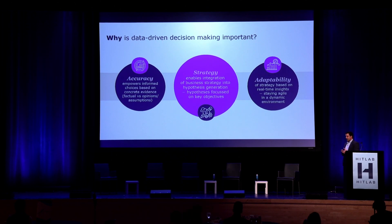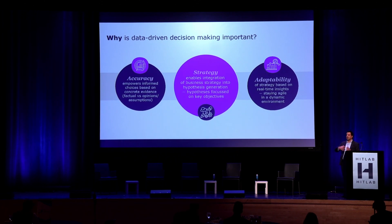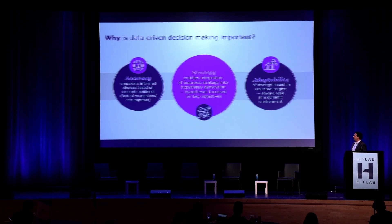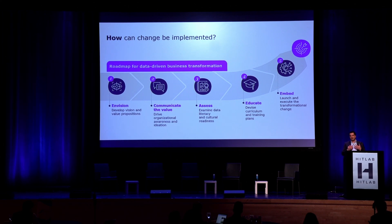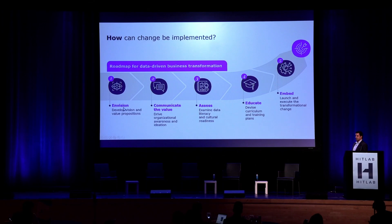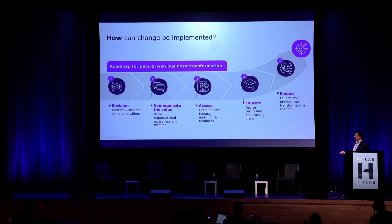Data gives us accuracy, and your business strategy can evolve depending on what the data tells you. But what's primarily happening is you have to implement a change. The first key thing in implementing change—whether a business transformation or a product launch—is to start with a vision and a value proposition. You communicate the value of the product, not just the product itself.